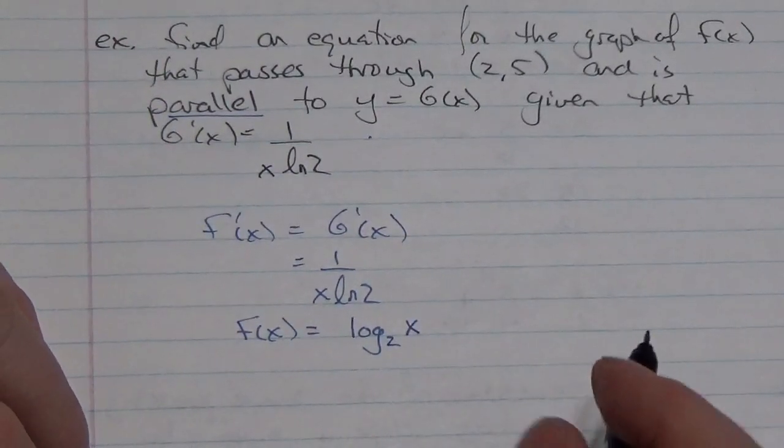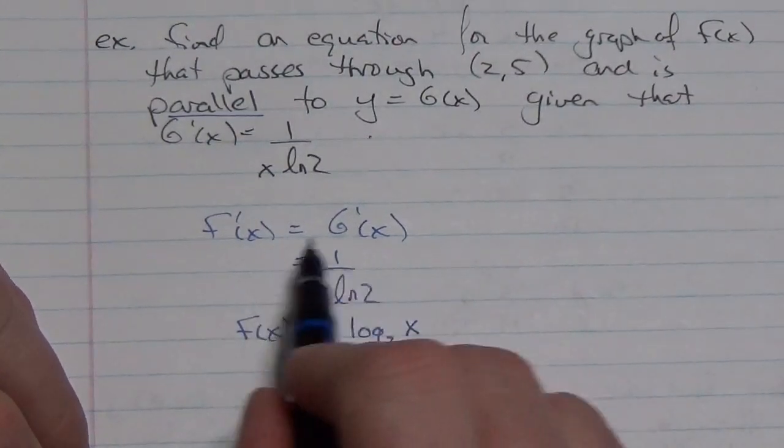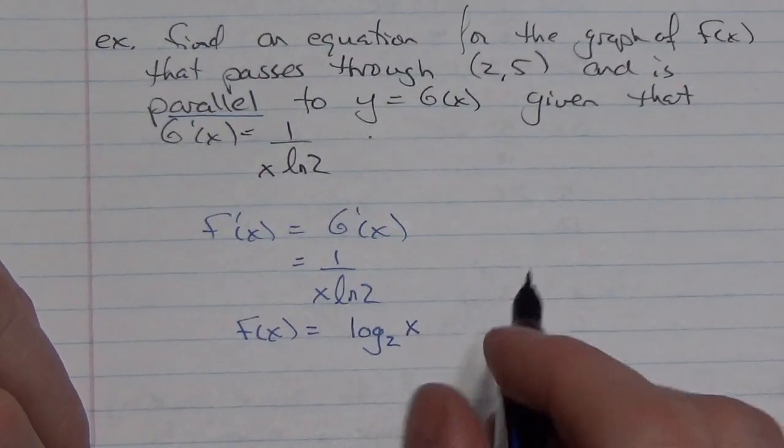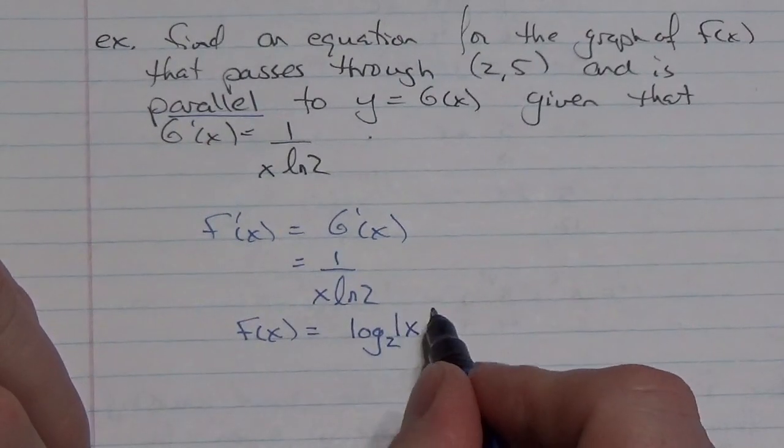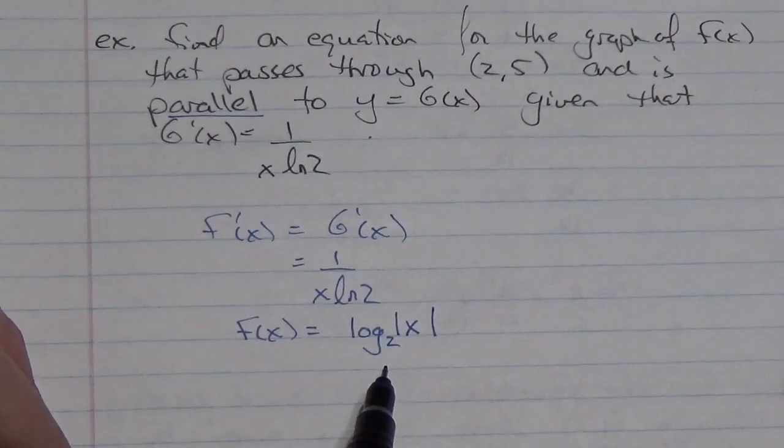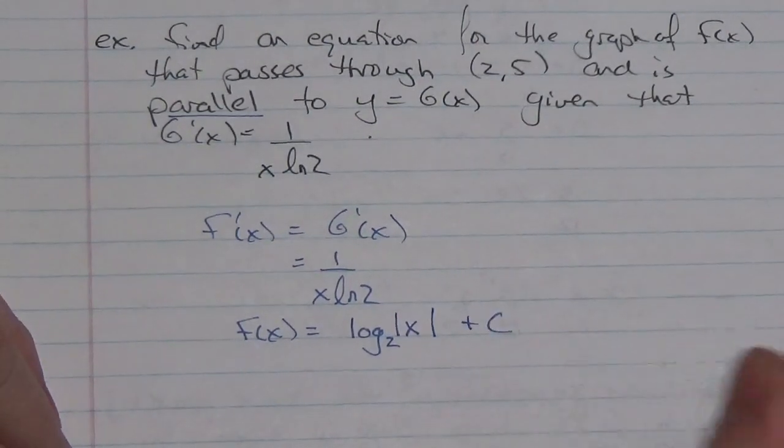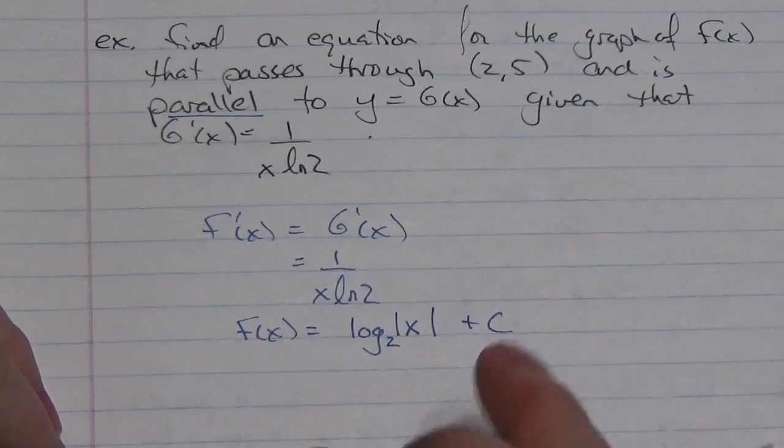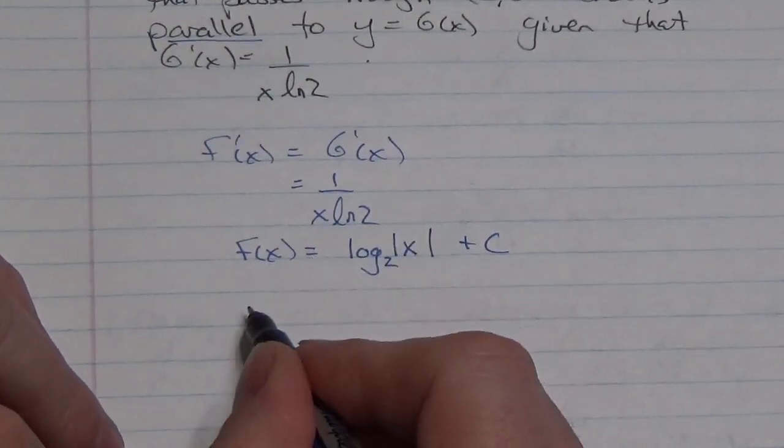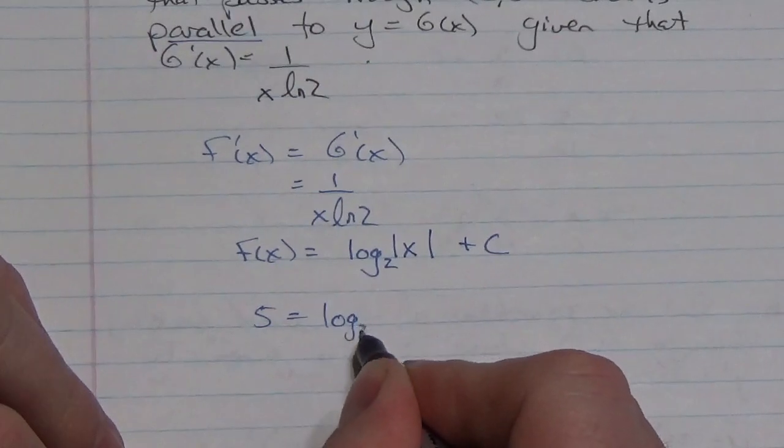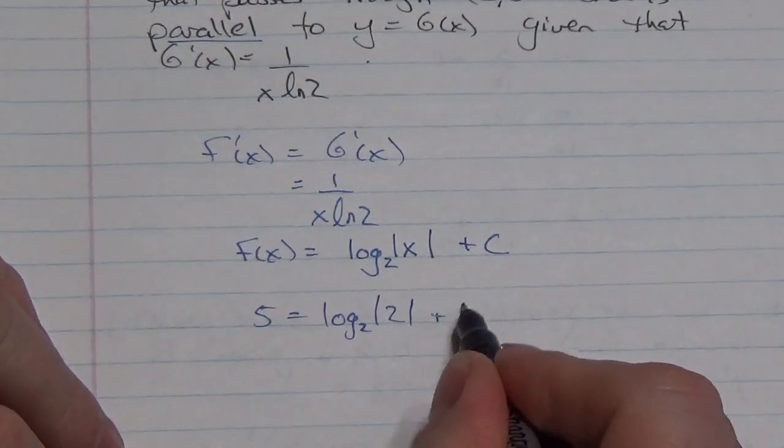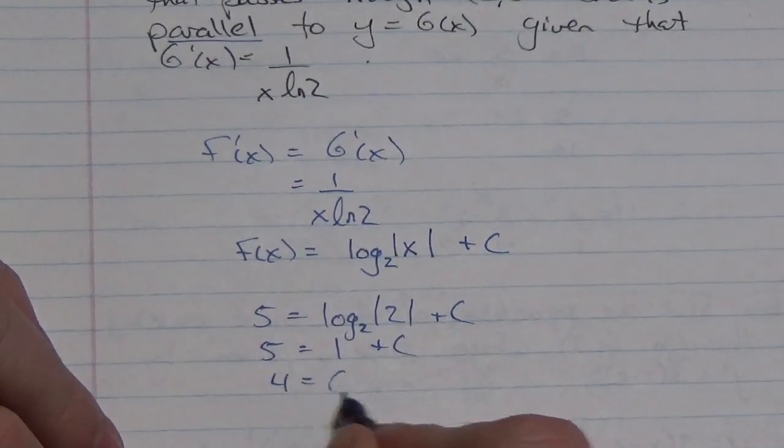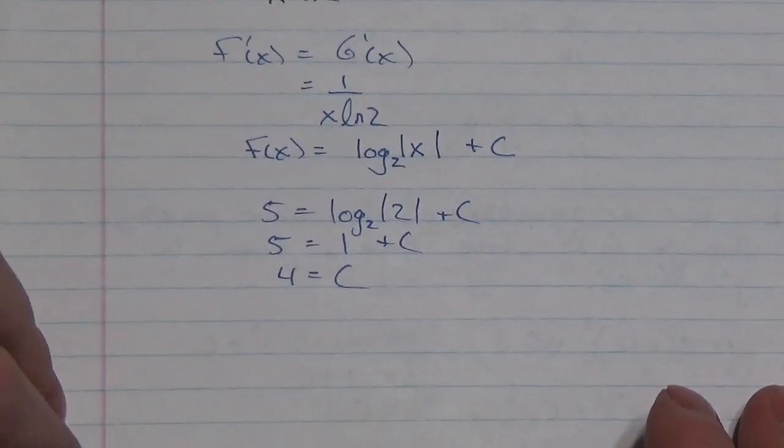Except for one little detail, and we've got to make sure that we're being careful about this: the domain here is that x can be anything other than 0, but here x has to be greater than 0. I don't like that. I want them to be closer than that. So I'm going to throw the absolute value on there just to make sure that those things match up. Then, I've got the plus c that I have to include. Now, to figure out what c is, I'm going to plug in my boundary condition. So that's going to be 5 = log base 2 of the absolute value of 2, plus c, and the log base 2 of 2 is just 1. So I can see right away that the arbitrary constant in this particular case is the number 4.